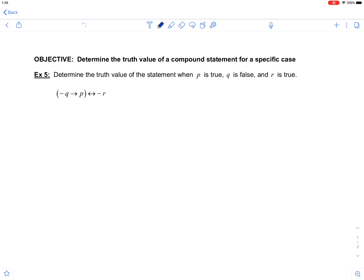Here we are looking at a specific case and finding the truth value of the statement. Notice example 5 reads, determine the truth value of the statement when P is true, Q is false, and R is true.